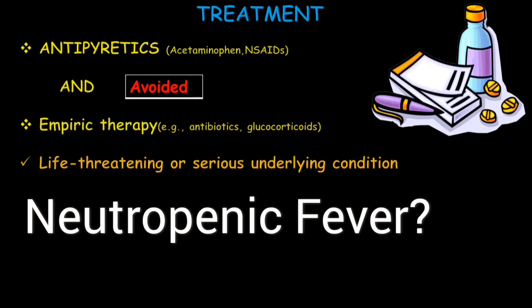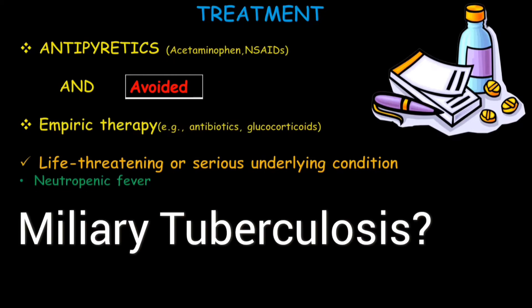So what is neutropenic fever? Febrile neutropenia is a condition when the neutrophil count is less than or equal to 500 per microliter, which increases the risk of severe bacterial infection. Etiologies include chemotherapy, bacterial infection, candidiasis, and herpes virus infection.